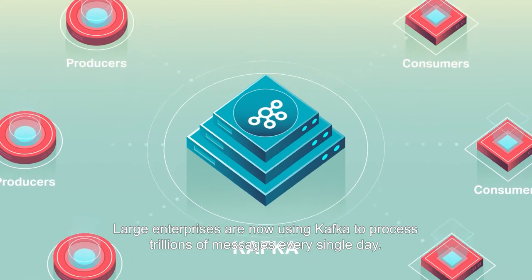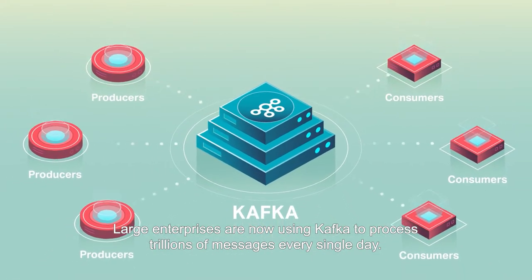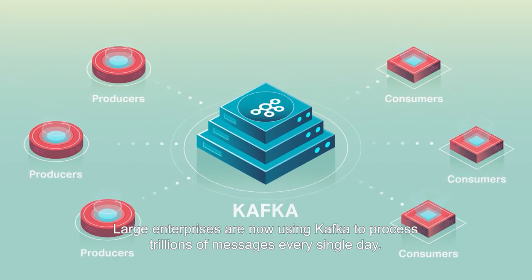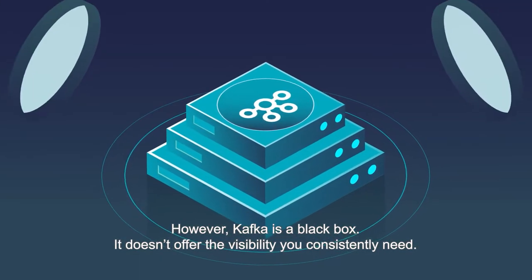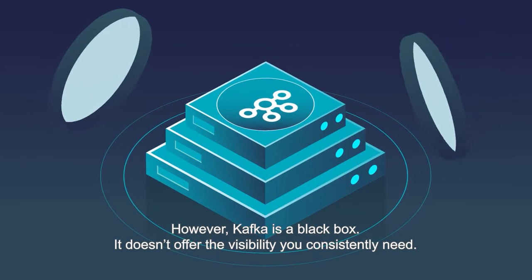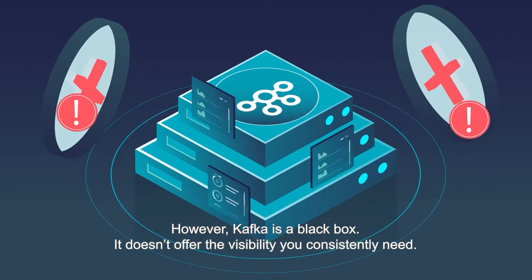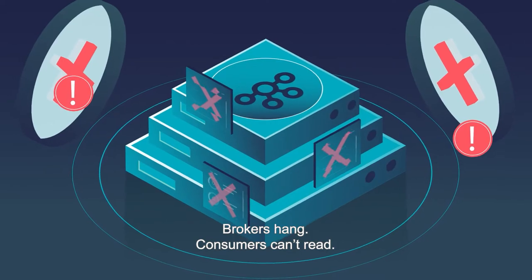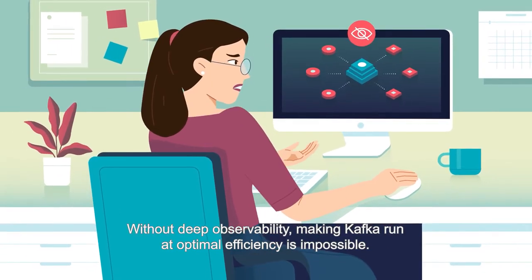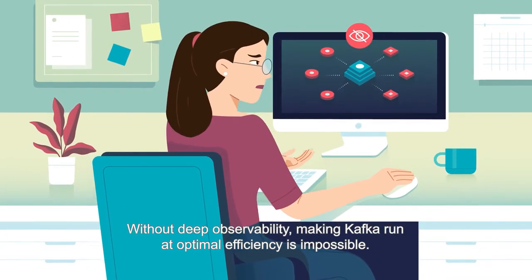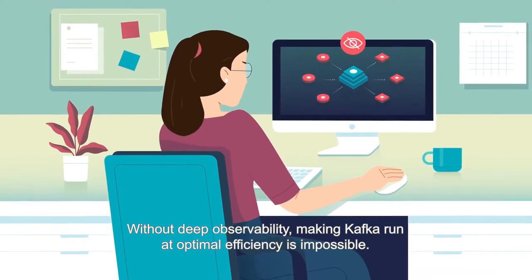Large enterprises are now using Kafka to process trillions of messages every single day. However, Kafka is a black box — it doesn't offer the visibility you consistently need. Brokers hang. Consumers can't read. Without deep observability, making Kafka run at optimal efficiency is impossible.